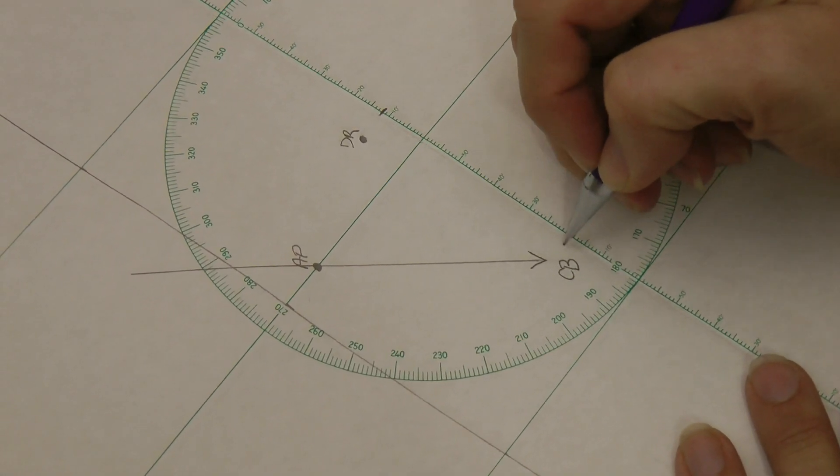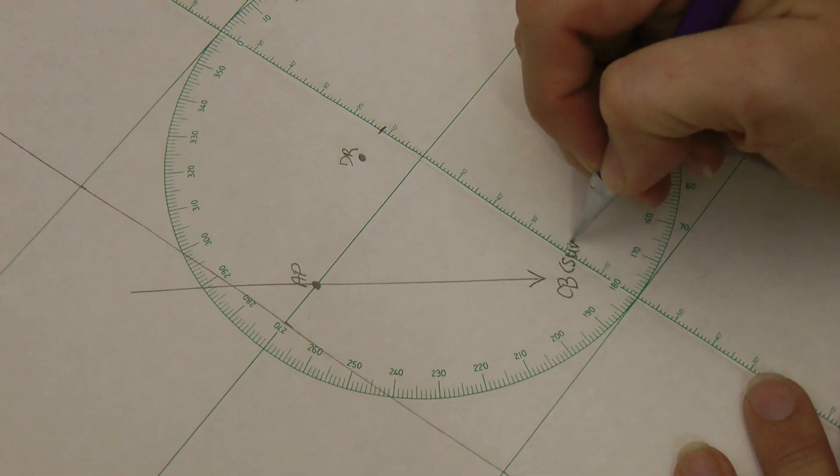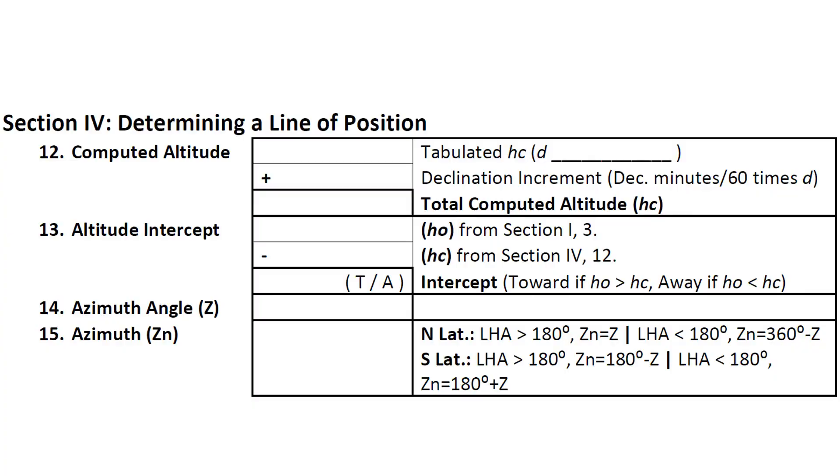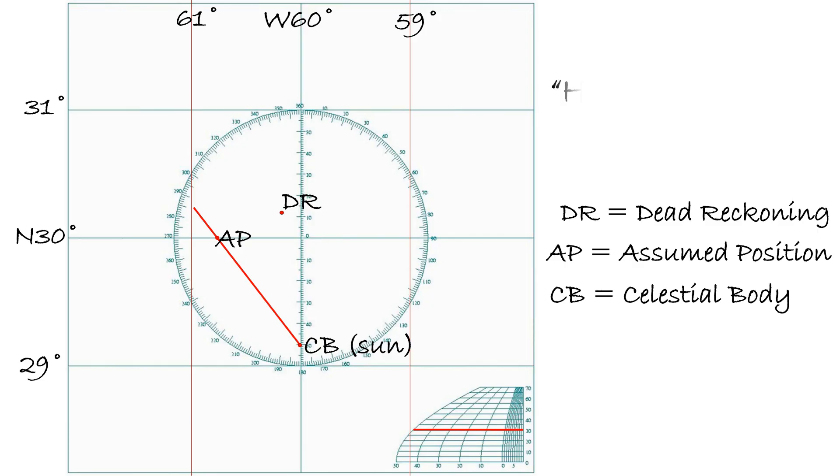With our site reduction form, we'll have to calculate an altitude intercept using the observed altitude, abbreviated HO, and the computed altitude, abbreviated HC. If your HO is larger than your HC, then you mark the distance towards the celestial body from your assumed position. If HO is less than HC, you mark the distance away from your assumed position.